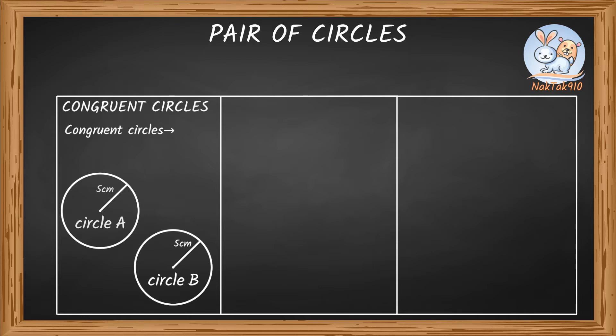That means congruent circles are circles that have the same radius, but different centers. So, these two circles here are congruent to each other because they have the same radius of 5 centimeters and different centers.